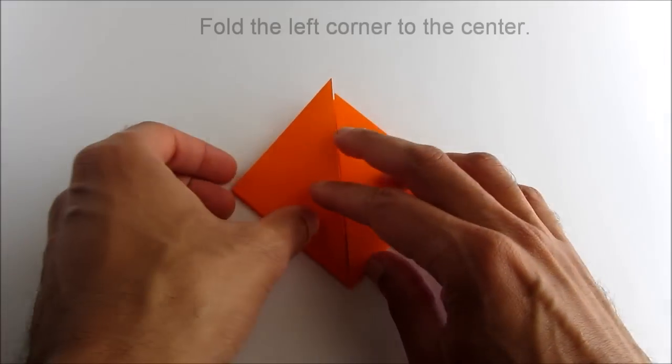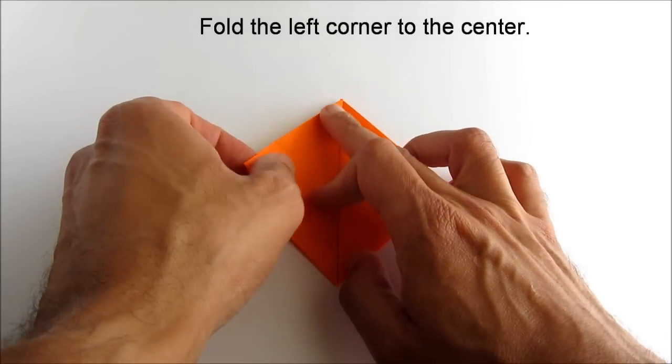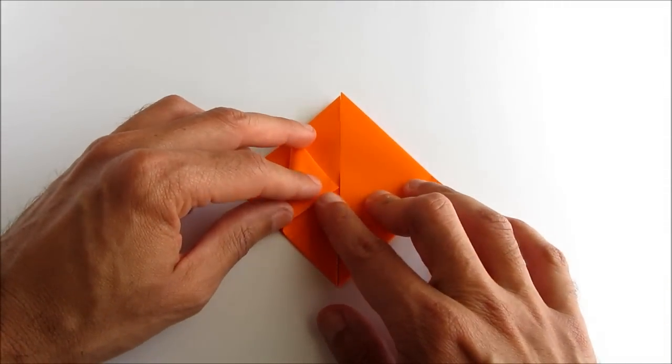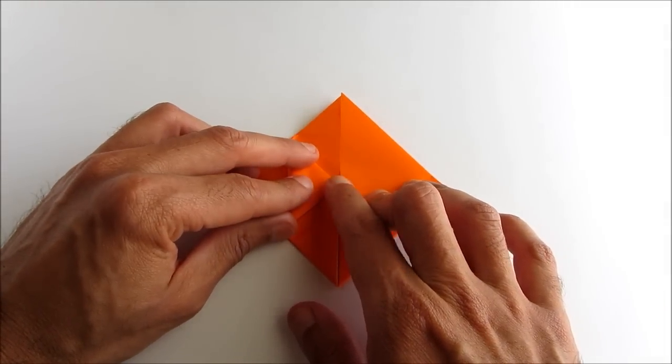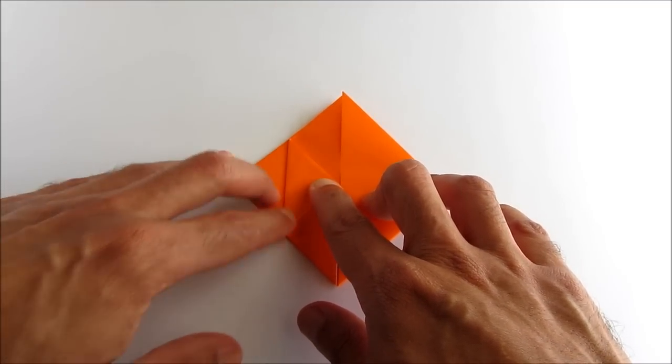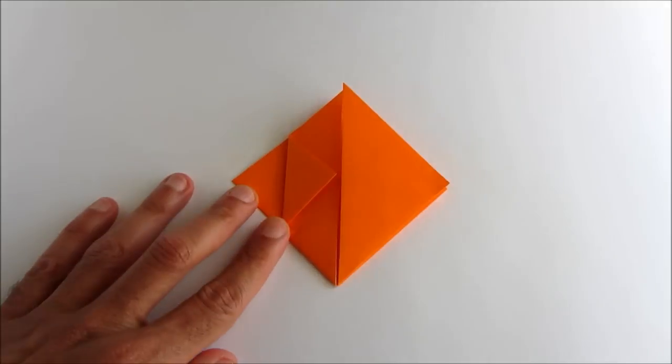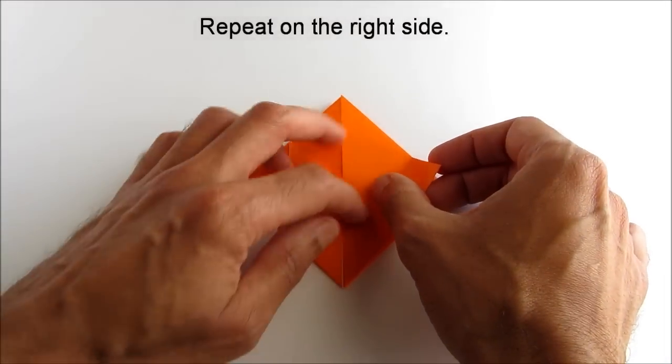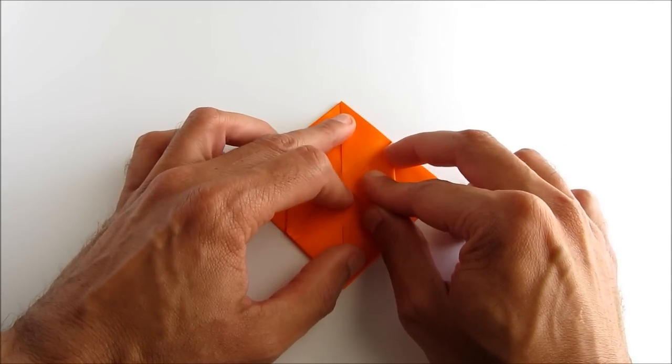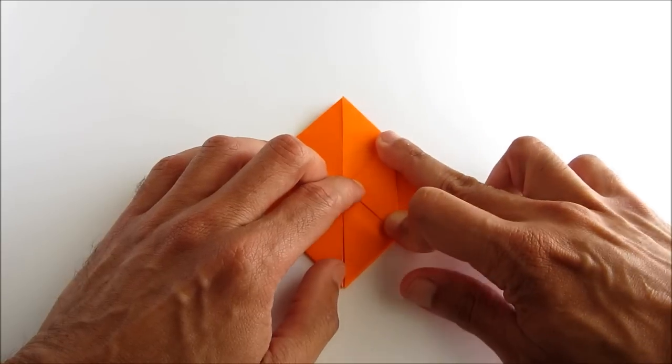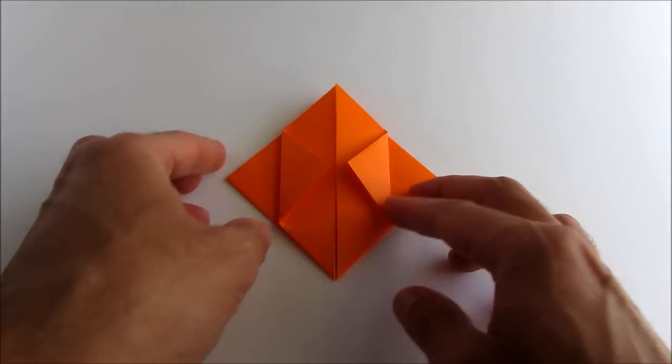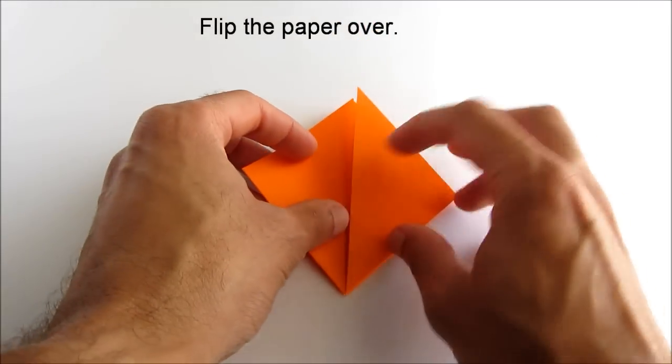Now fold the left corner to the center line. Do that again on the right side. Flip the piece over and do those last two folds on the back side.